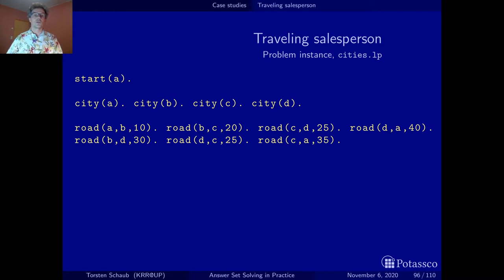We mark also the start, the starting city, the starting and the returning city. So in this case we start at city A. This is the problem instance.